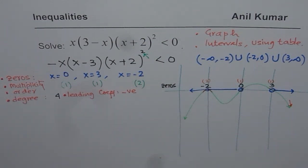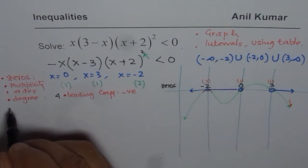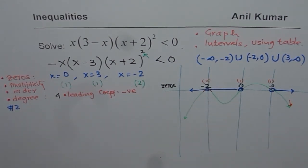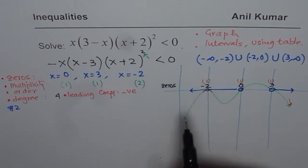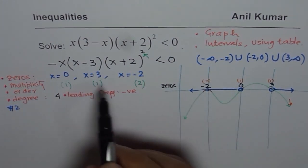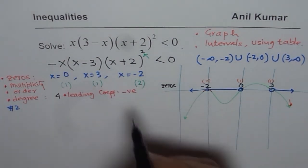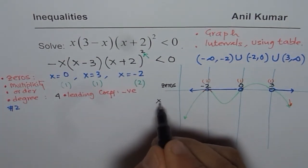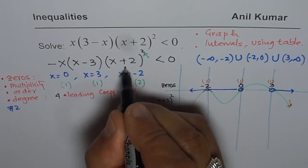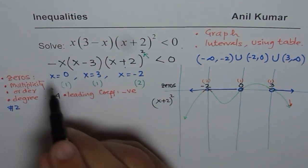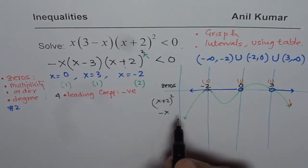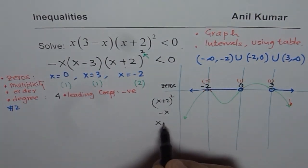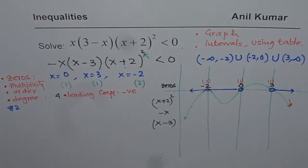That was Method 1. Now we use the second method: table of values. We write down all the factors. The first factor is (x plus 2) whole square. Then we include minus with x, giving us minus x. And the third factor is x minus 3.